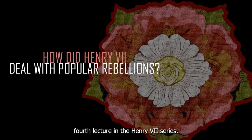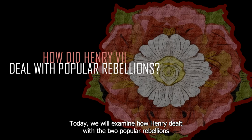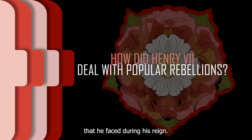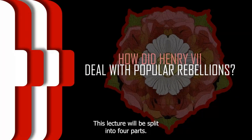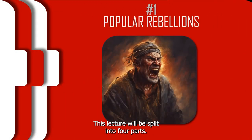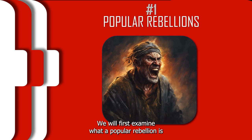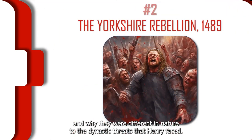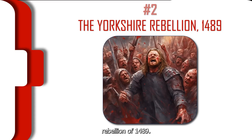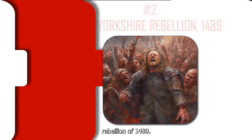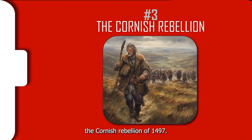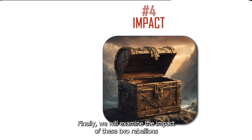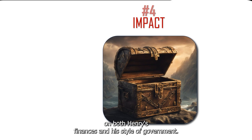Welcome to the fourth lecture in the Henry VII series. Today we will examine how Henry dealt with the two popular rebellions that he faced during his reign. This lecture will be split into four parts. We will first examine what a popular rebellion is and why they were different in nature to the dynastic threats that Henry faced. We will then examine the Yorkshire Rebellion of 1489, the Cornish Rebellion of 1497, and finally the impact of these two rebellions on both Henry's finances and his style of government.